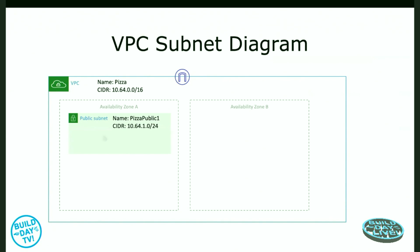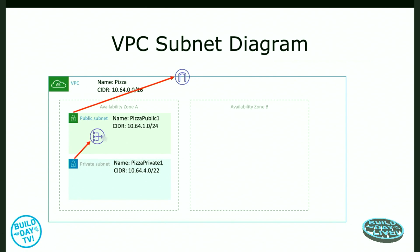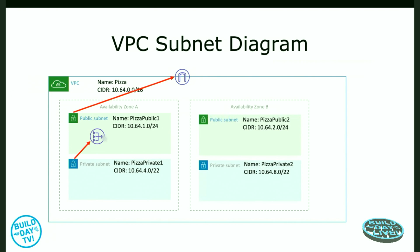We're going to start with the networking that we built in the first episode, which has a public subnet, a private subnet, and a NAT gateway providing internet access for the private subnet. The first thing we're going to do is mirror those subnets — create two public and private subnets in a different availability zone. Then we're going to deploy another NAT gateway and set up some route tables to match.